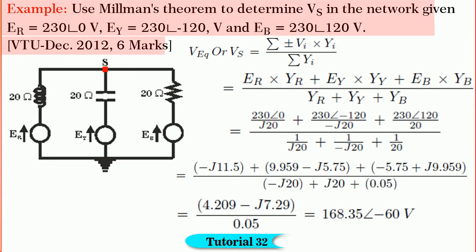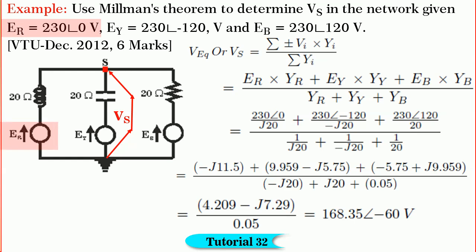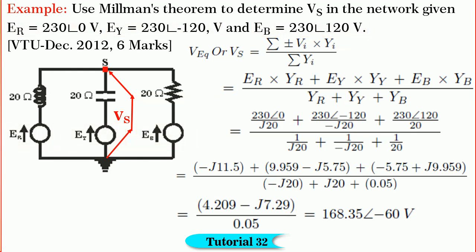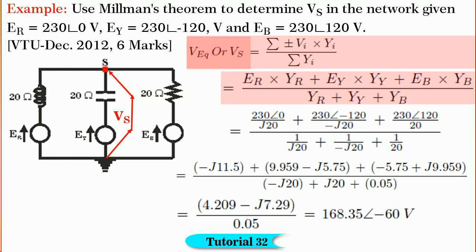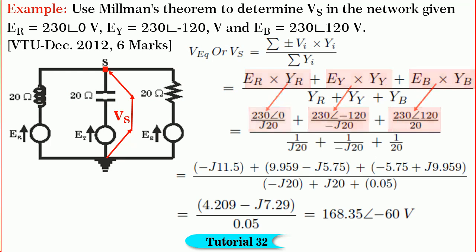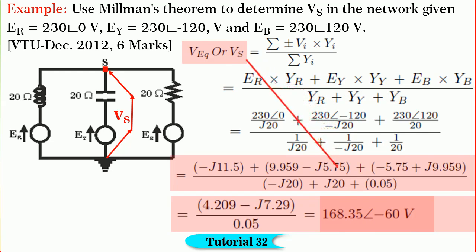Friends, let us solve another straightforward problem to find Vs using Millman's theorem. It is given that ER = 230∠0 volts, EY = 230∠−120 volts, and EB = 230∠120 volts. For the instant considered, all sources have the same polarity. Using Vs = (ER·YR + EY·YY + EB·YB) / (YR + YY + YB), and substituting the values, we get Vs = 168.35∠−60 volts.